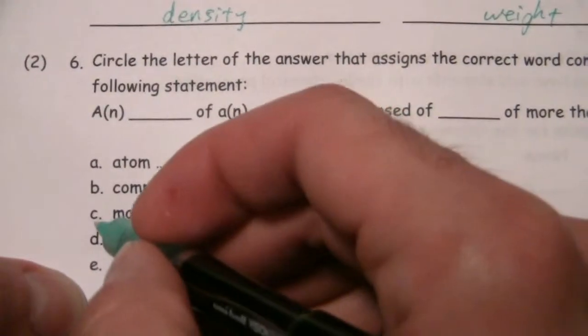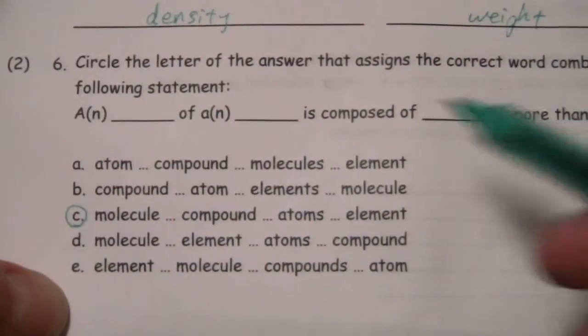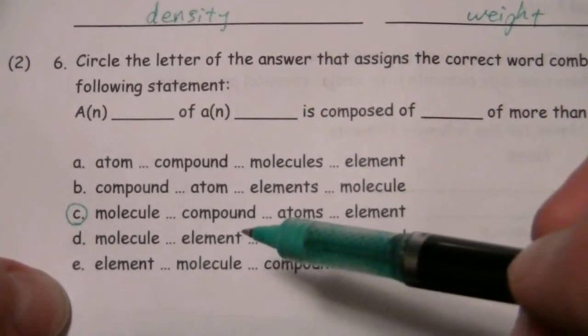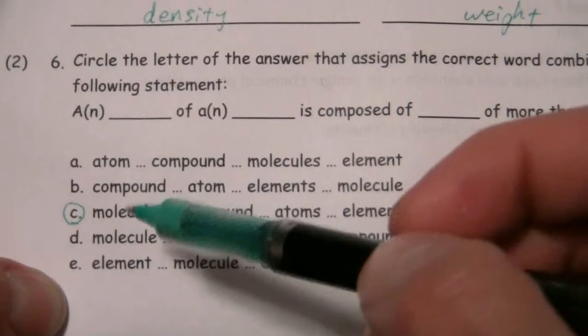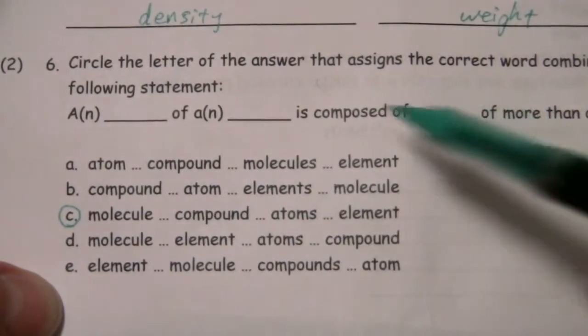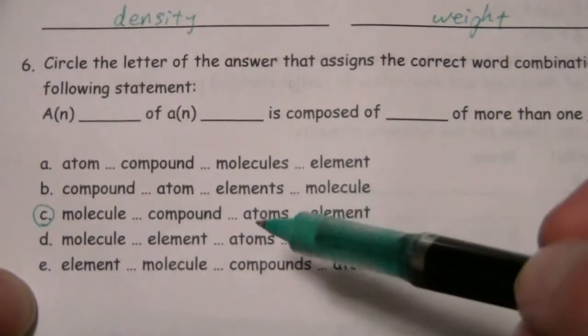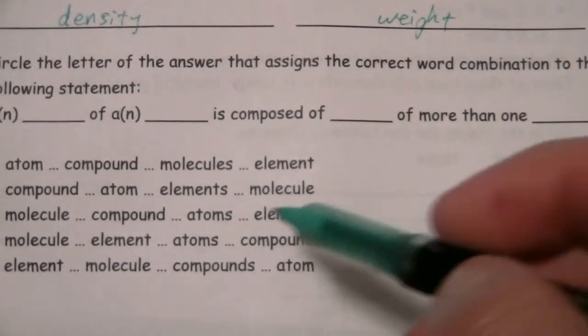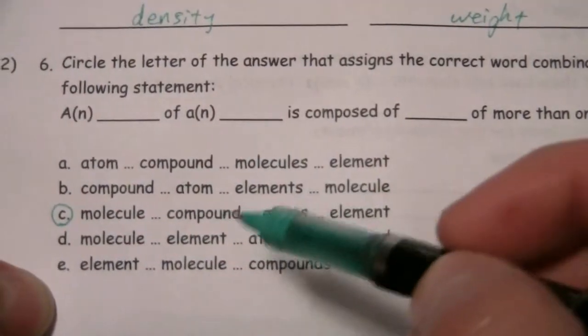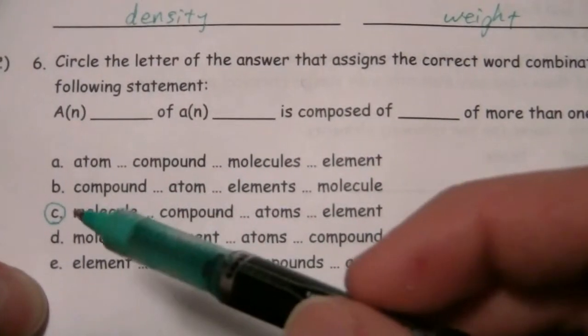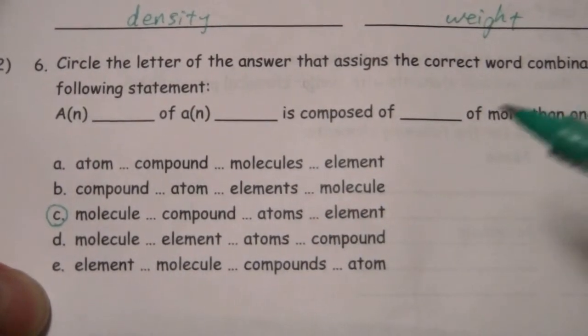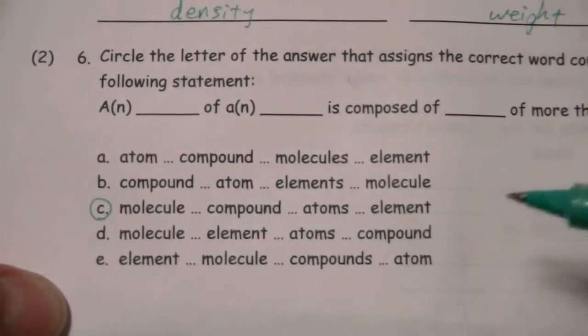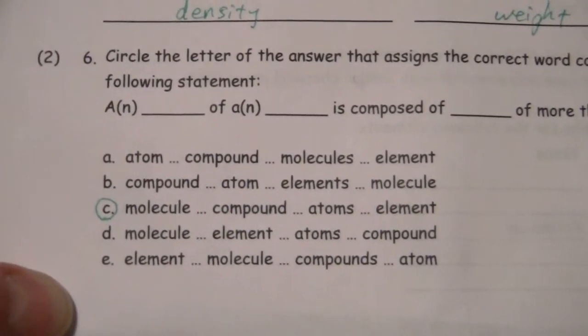So C is the best answer, and certainly a molecule of a compound - compounds are made from molecules, that's the smallest part of a compound - is composed of atoms of more than one element. Atoms are the smallest part of elements, molecules of compounds, and a molecule has more than one atom in it. More than one element in a compound. So that is the best answer there.